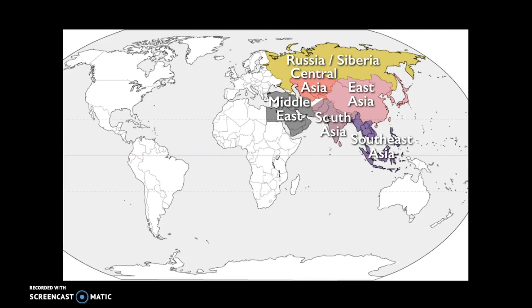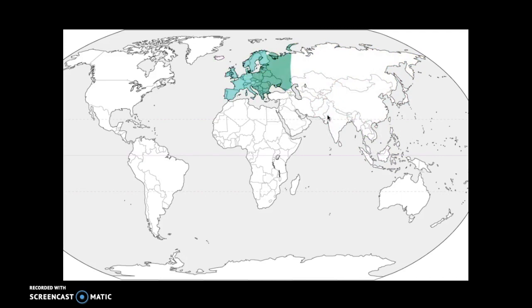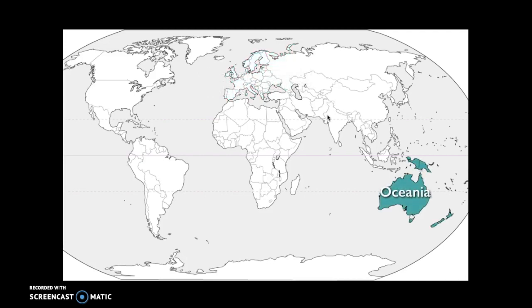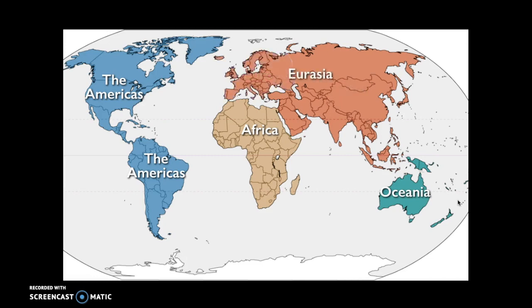Europe can be broken down into Western Europe and Eastern Europe, which will be important for purposes of the Cold War later in the class. Oceania includes Australia, New Guinea, New Zealand, and the Polynesian islands in the Pacific. We can also refer to Europe and Asia together as Eurasia since they form one connected land mass, or include Africa — which was connected to Eurasia for most of world history — and call that Afro-Eurasia. Those are all the various geographic regions we'll be referring to throughout the course.